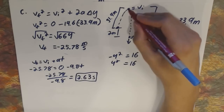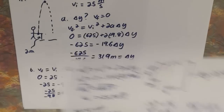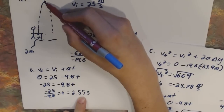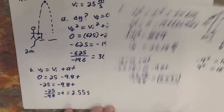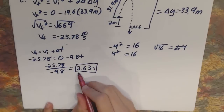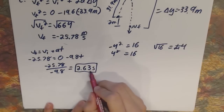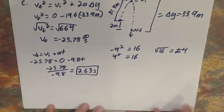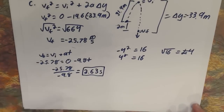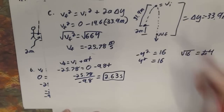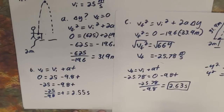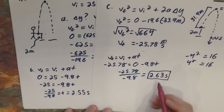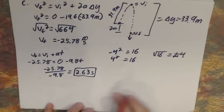The time to fall from the peak to the ground is 2.63 seconds, compared to 2.55 seconds to rise from launch to peak. The fall time is slightly greater because of the extra 2 meters — and that should make sense as a sanity check: going a greater distance with the same acceleration should take more time.